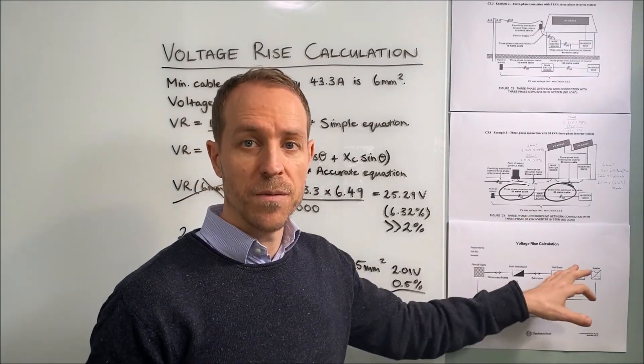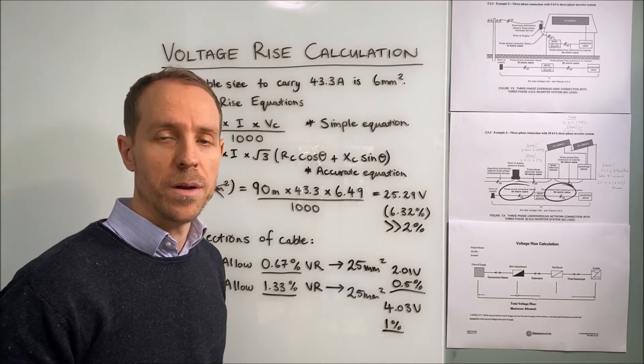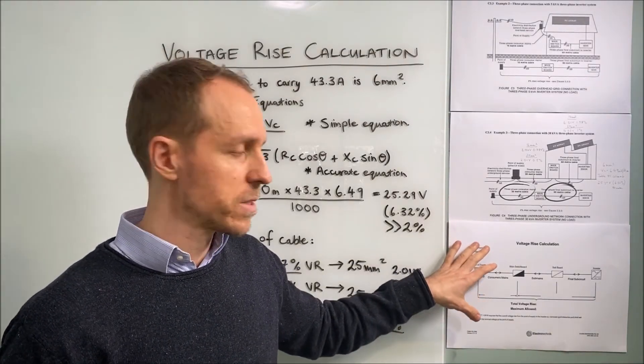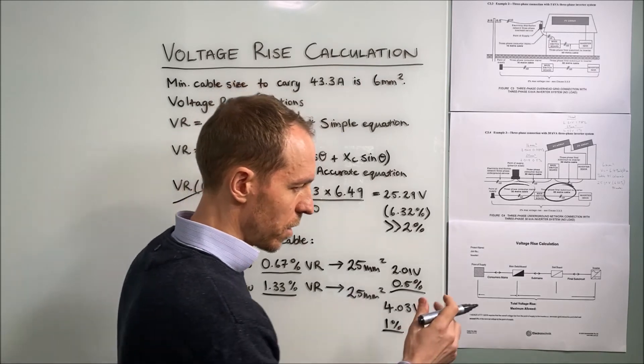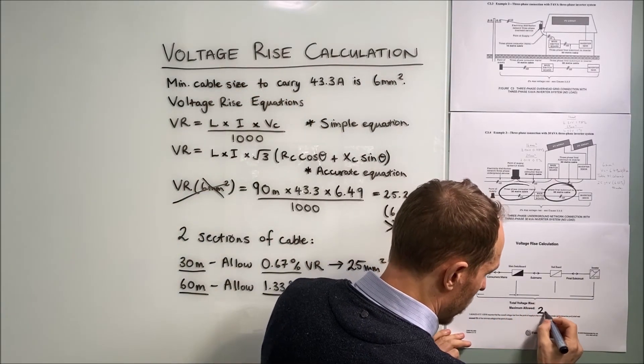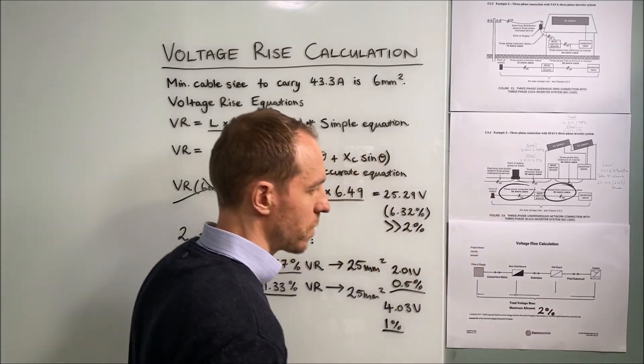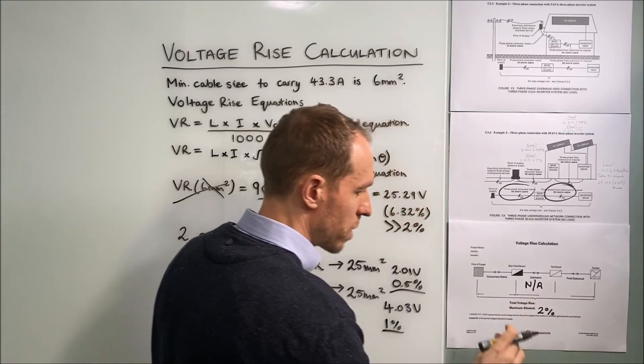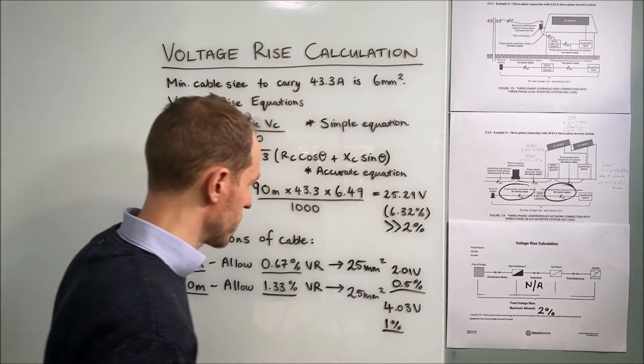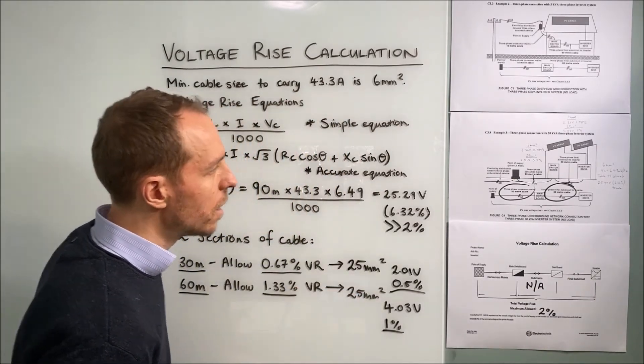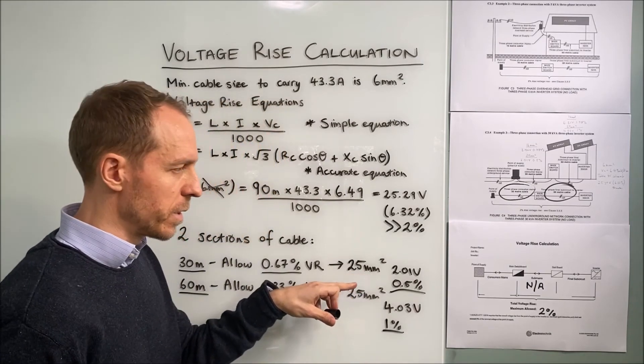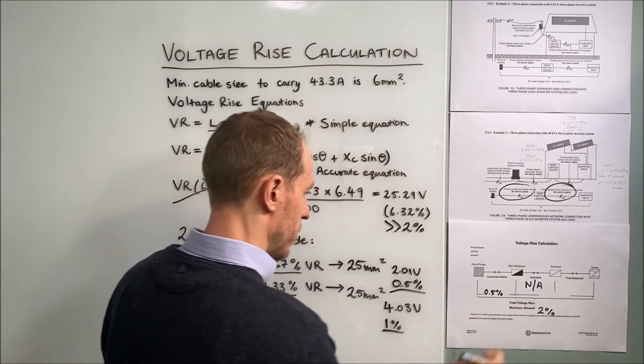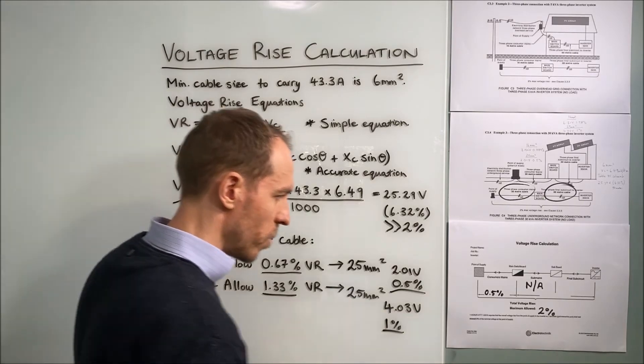Now, if you are producing a voltage rise calculation report for your power authority, it might look something like this. This is the output of our software. So you would have a maximum allowed limit of 2%. Now, sub mains section is not applicable in this case. We have a consumer's mains and a final sub circuit. Our calculated voltage rise for the consumer's mains was 0.5%. And over here for our final sub circuit, we have 1%.